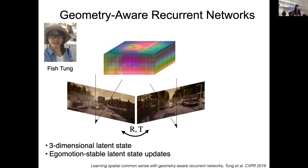The two important features of these networks are: first, the latent state is three-dimensional — three spatial dimensions instead of 2D; and second, the way you update features goes through ego-motion estimation. Driving companies also do this — they have excellent ego-motion estimation. When you want to use the representation for a downstream task such as driving, cooking, or imitation, you really cannot stay in 2D space. Going to 3D makes things like ego-motion stabilization very important.